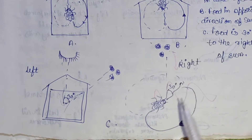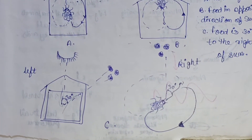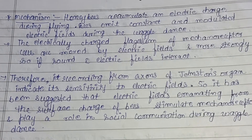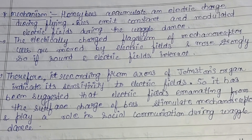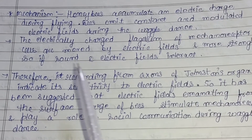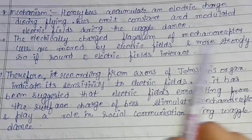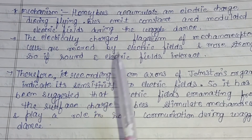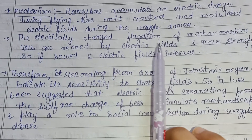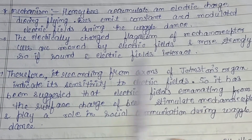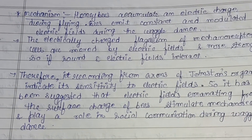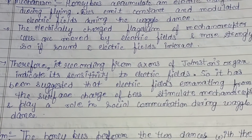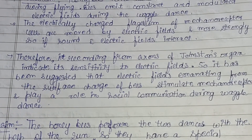Regarding the mechanism of the waggle dance: honeybees accumulate an electric charge during flight, and they emit both constant and modulated electric fields during the waggle dance. The electrically charged flagellum of the mechanoreceptor cells — which are present in the cuticle of the honeybee — is moved by these electric fields. When sound and electric fields interact together, the mechanoreceptor cells act more vigorously.